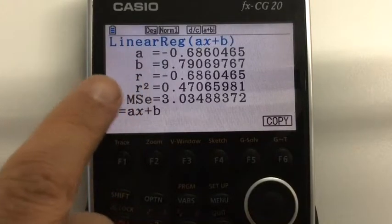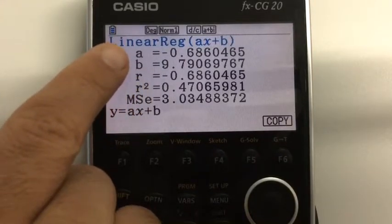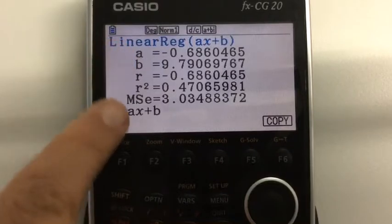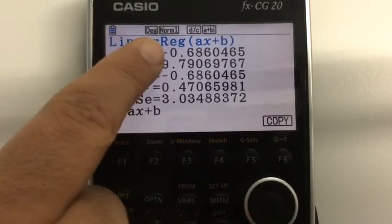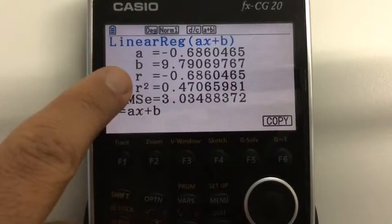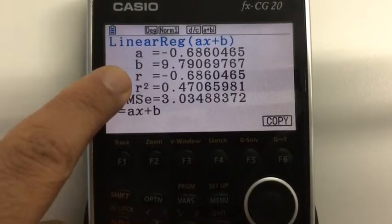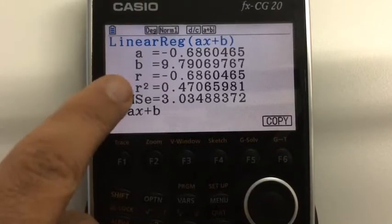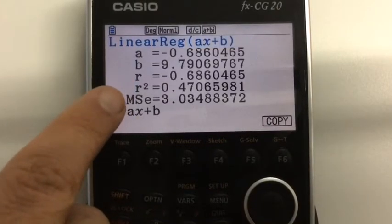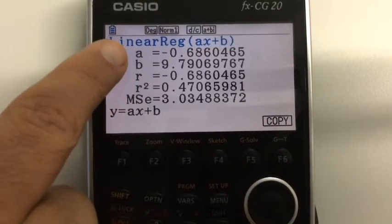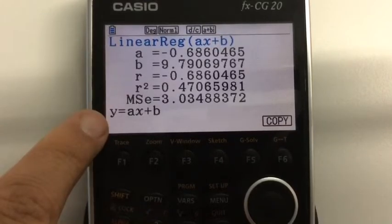And we can see that we've got the regression analysis there. We've got Y equals AX plus B, so this is our gradient, and this is our intercept. And we've got our correlation value appearing for R. This is the product moment correlation coefficient. R squared and MSE we probably don't need to worry too much about at this stage, but we've got A and B, so we've got our regression line.